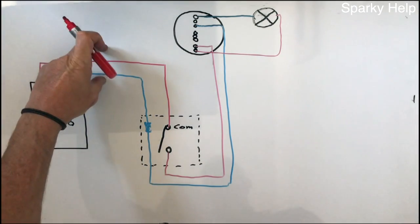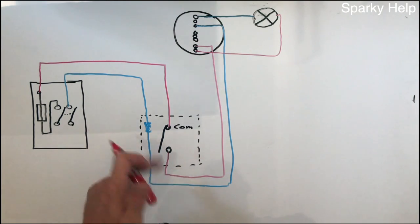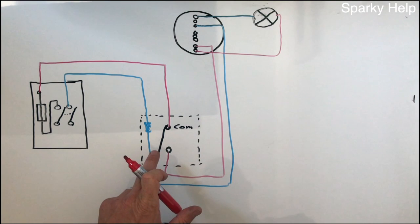So now when wired we have a twin and earth that comes into the box and we have a twin and earth which comes out of the box. When taking these twin and earth to these points here, you need to mark which cable is going where, so we need to mark the switch line cable going back up to the light.